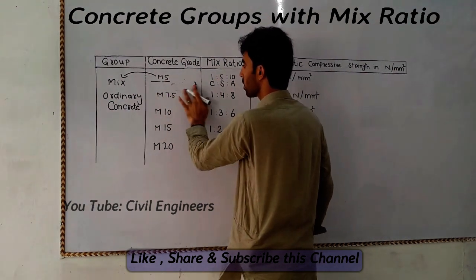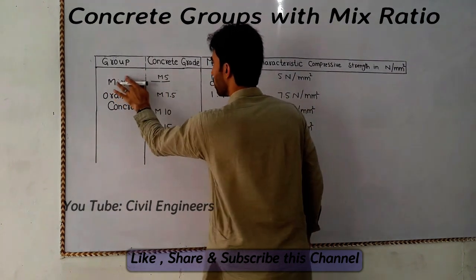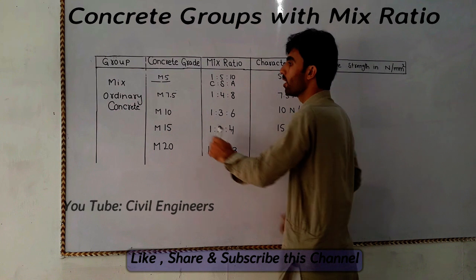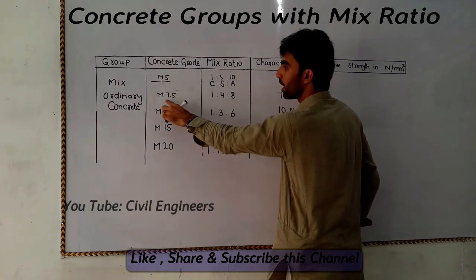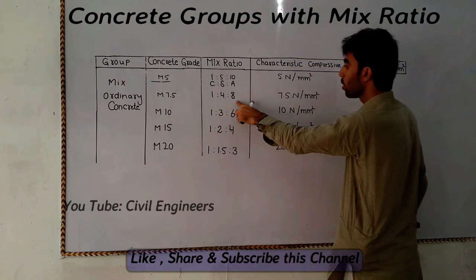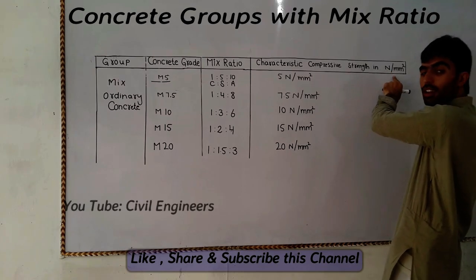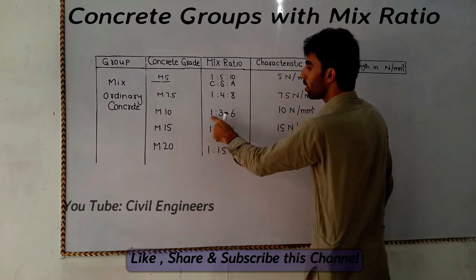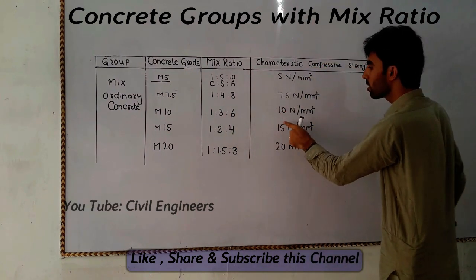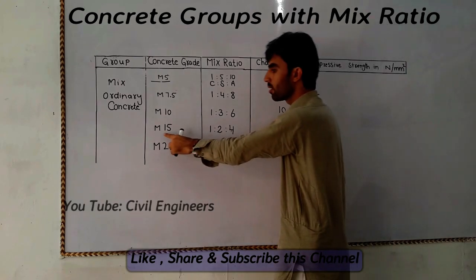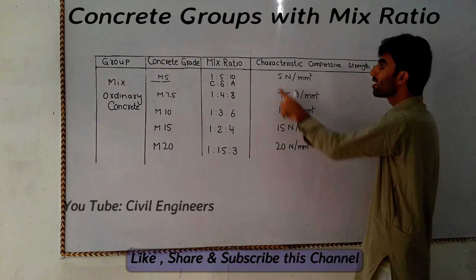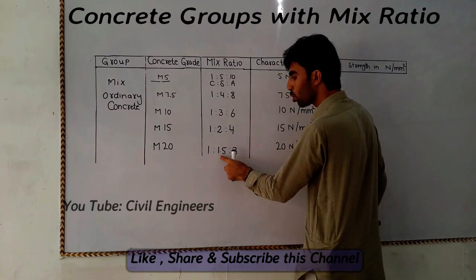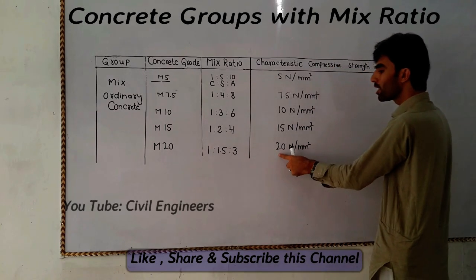So 5 Newton per mm square is the compressive strength for M5. For M7.5 the mix ratio is 1:4:8 and the compressive strength is 7.5 Newton per mm square. For M10 the ratio is 1:3:6 and strength is 10 Newton per mm square. For M15 the ratio is 1:2:4 and strength is 15 Newton per mm square. For M20 the ratio is 1:1.5:3 and strength is 20 Newton per mm square.